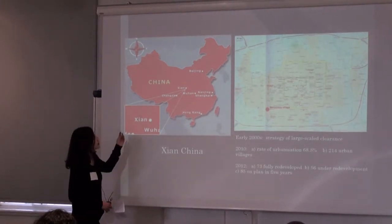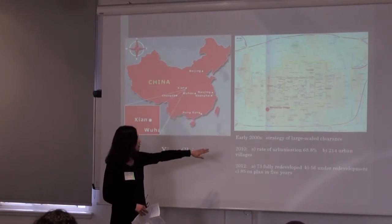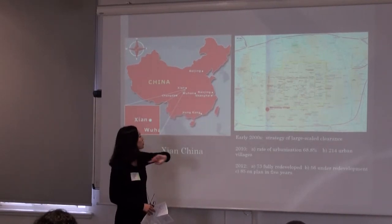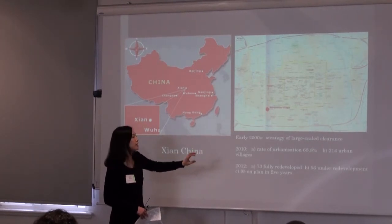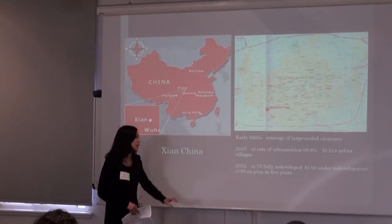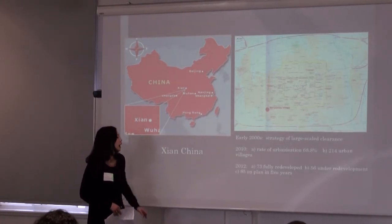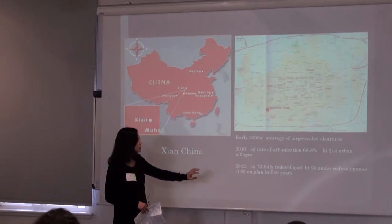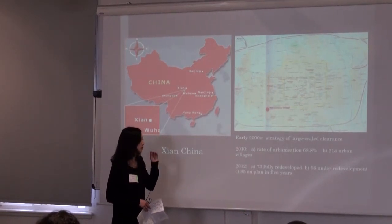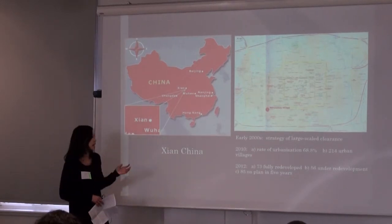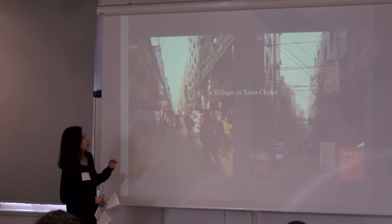The case I'm presenting today is in Xi'an, China. Xi'an is in the middle of China. In early 2010, the rate of urbanization in Xi'an had reached 60%, which produced more than 200 urban villages inside it. In 2012, 73 of them had already been redeveloped, 56 were under redevelopment, and more than 80 were to be redeveloped in five years. N village is one of them.